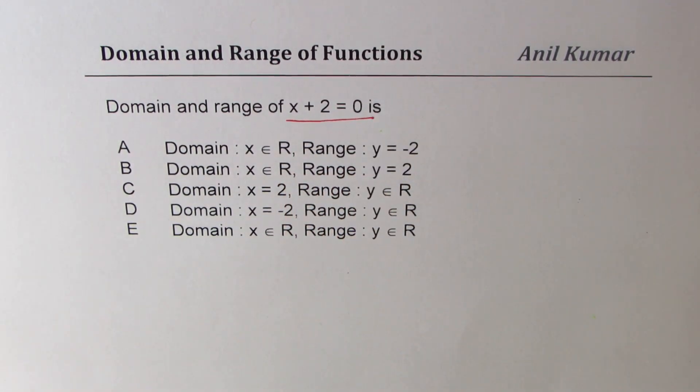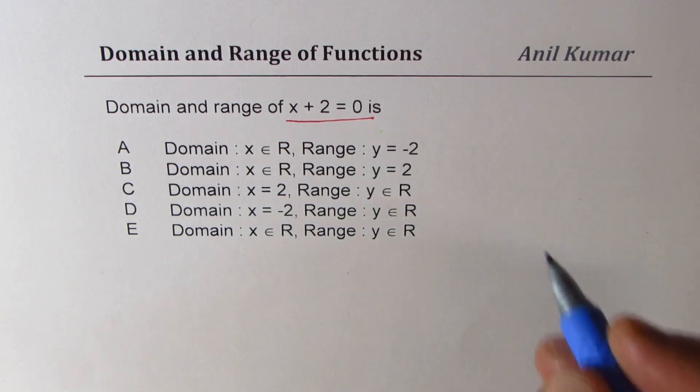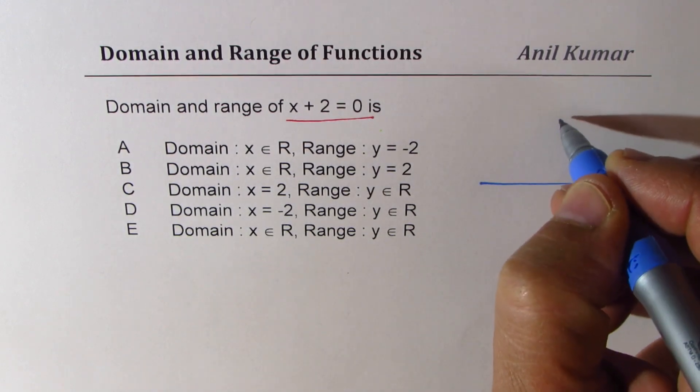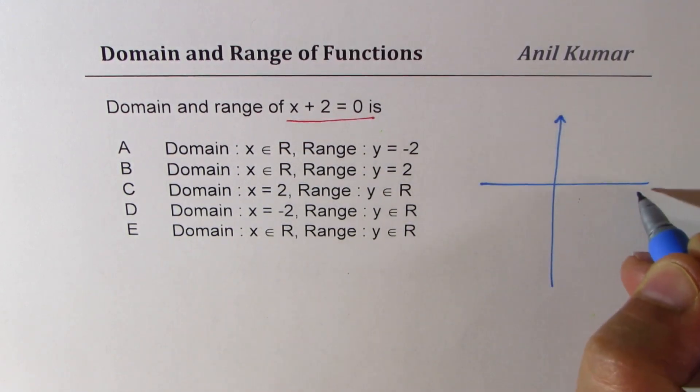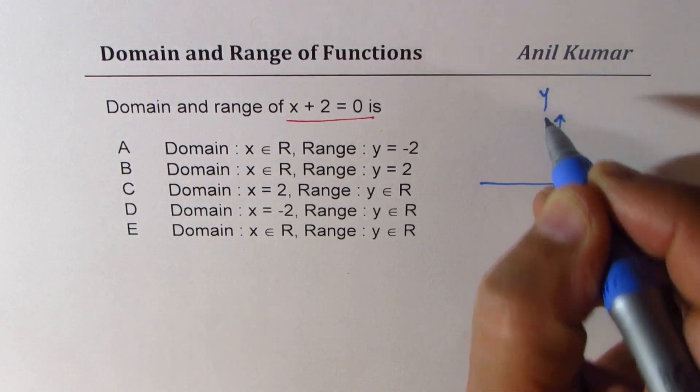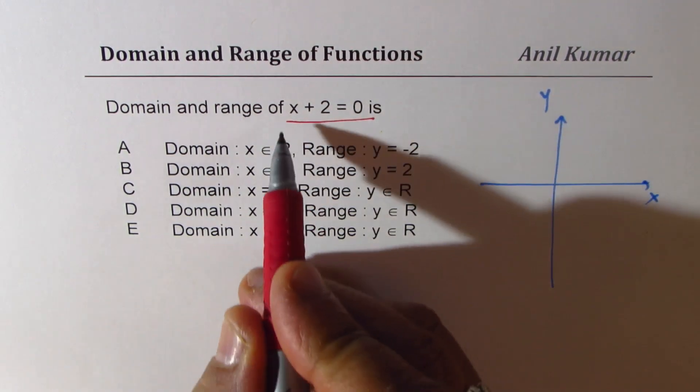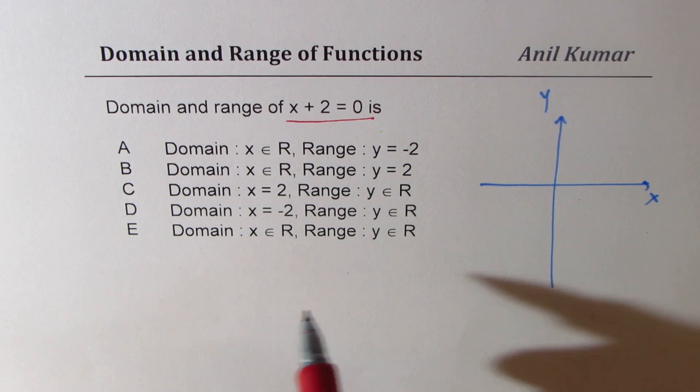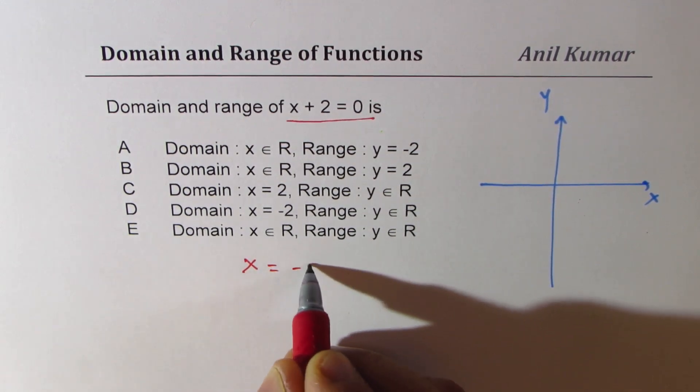What is this? You can pause the video and answer this question. Well, let us sketch this line also. So on a coordinate plane, X plus 2 equals 0 means X equals minus 2.